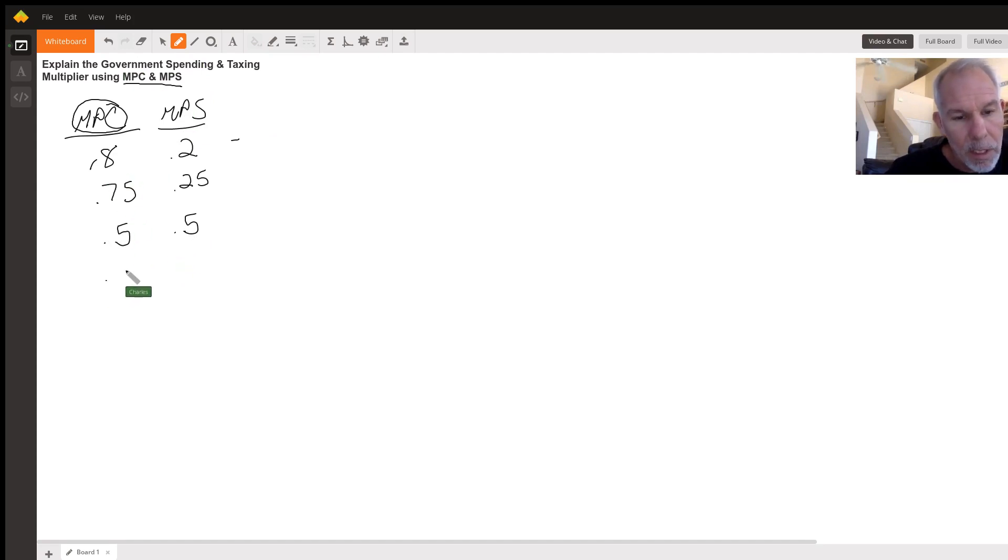If your MPC is 0.9, your MPS is 0.1. The reason why I gave you these four, because these are the biggest ones that are asked by the AP exam. If you know those four, understand how to do it. It's pretty simple. But these four are the biggest ones that are asked.